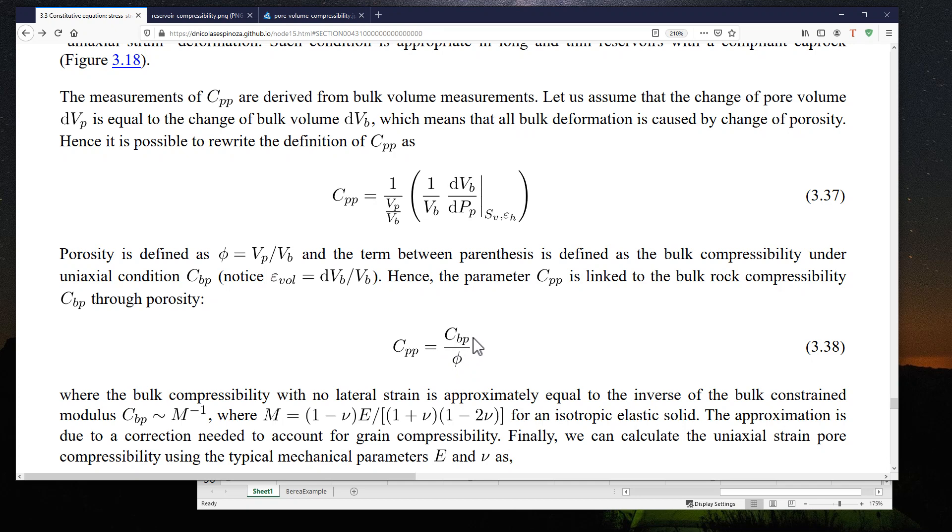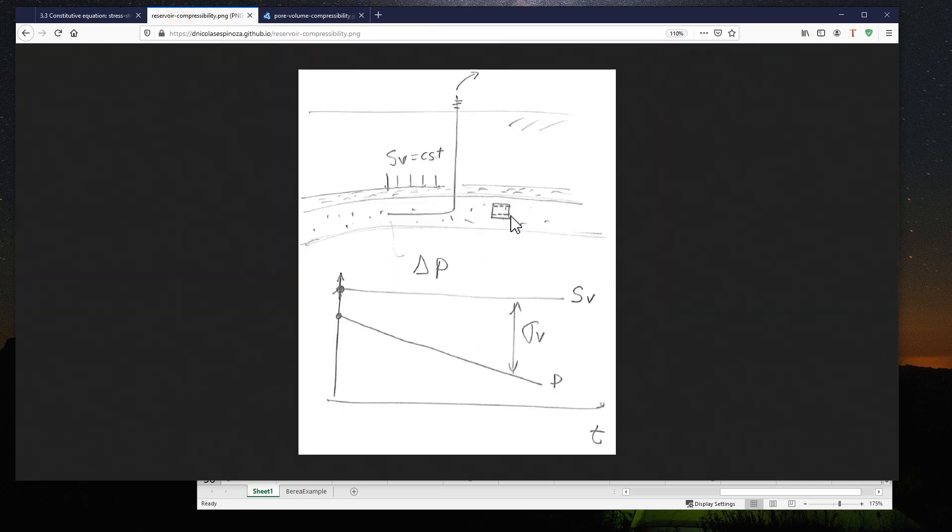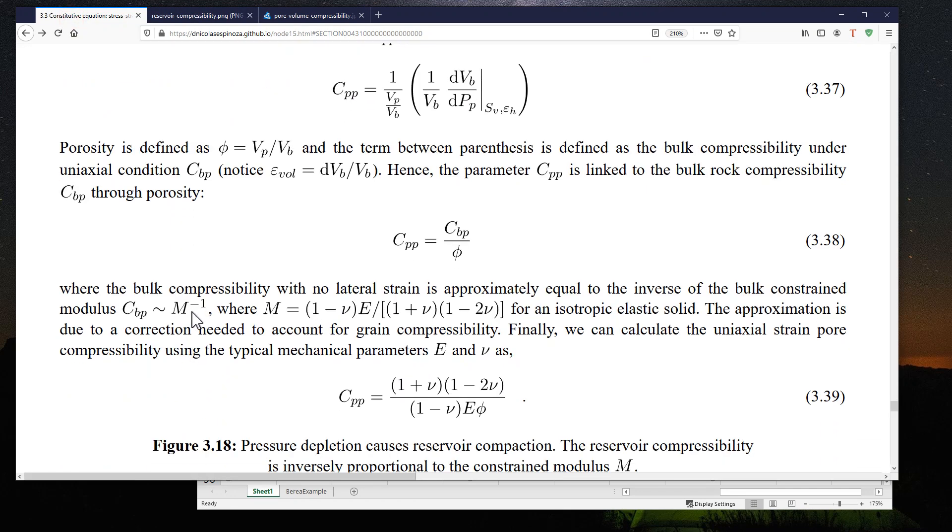So I can relate the pore volume compressibility to the bulk compressibility of the rock through the porosity. And what is the bulk compressibility of the rock? Well, the bulk compressibility of the rock is something that we have already seen. And for the case of the one-dimensional strain condition or uniaxial strain condition, this is equal to the inverse of the constraint modulus, where the constraint modulus depends on the Young modulus and the Poisson ratio. It is the same equation and this stiffness characterizes or quantifies the stiffness of a rock when you have strain just in one direction.